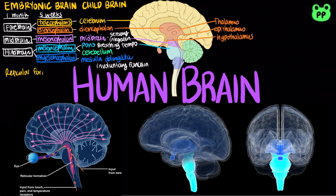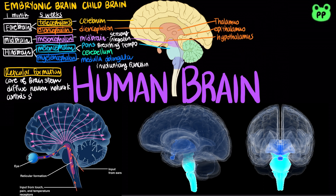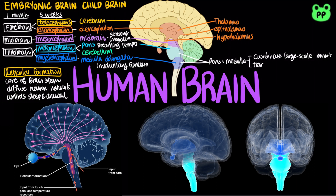The core of the brainstem has a diffuse network of neurons called the reticular formation, which regulates the amount and type of information that reaches the cerebral cortex and controls arousal and sleep. Pons and medulla also function in coordinating large-scale movement and transfer of information between the peripheral nervous system, midbrain, and forebrain.